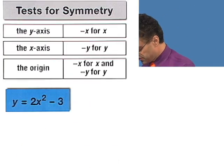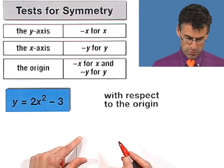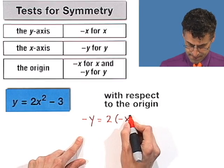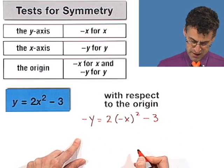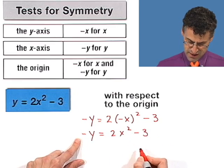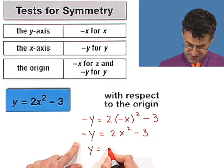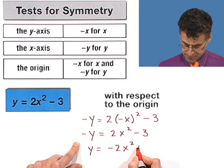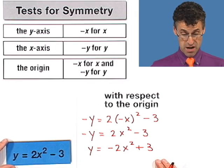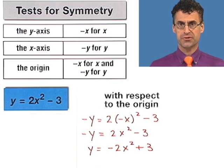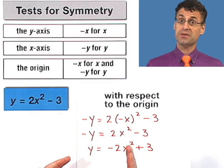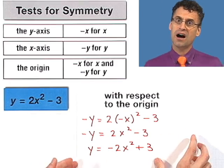And finally, let's see if it's symmetric with respect to the origin. There we change everything — replacing y's by negative y's and x's by negative x's. Simplifying, this is just going to be 2x squared minus 3. Then multiplying through by negative 1 to solve for y, we get negative 2x squared plus 3. Is that the exact same thing as the original? The answer is no. So this graph will not be symmetric with respect to the origin.